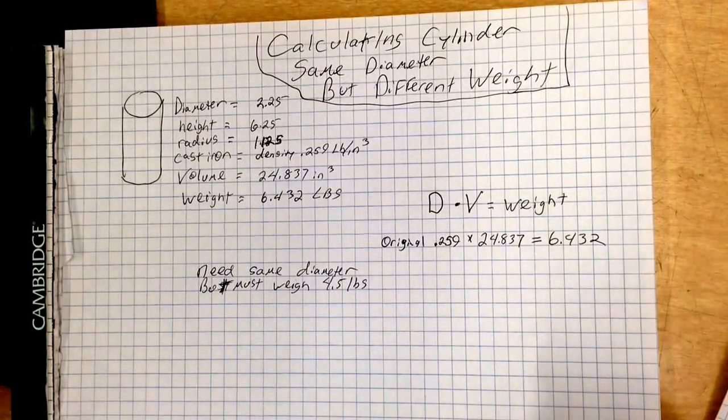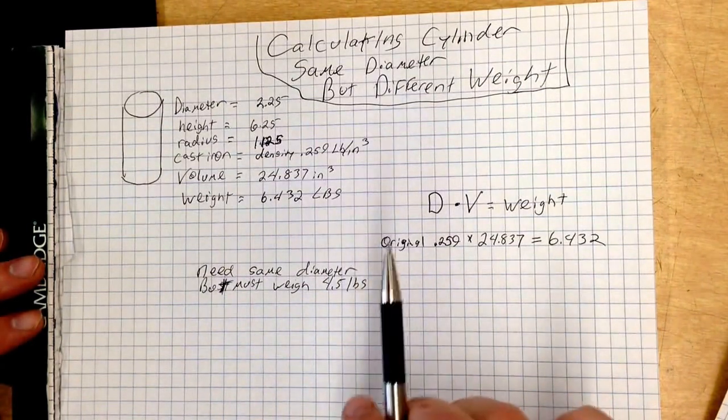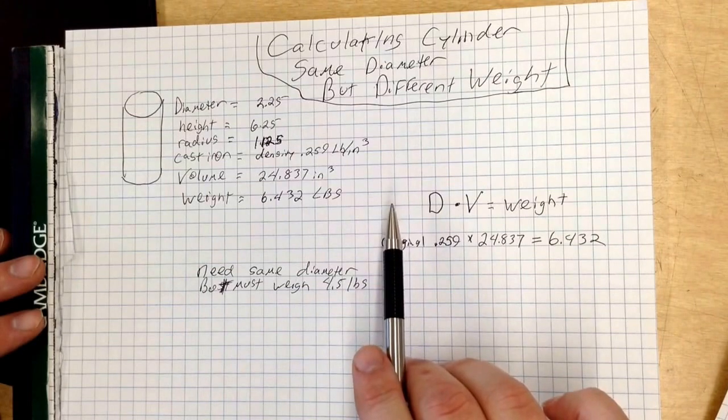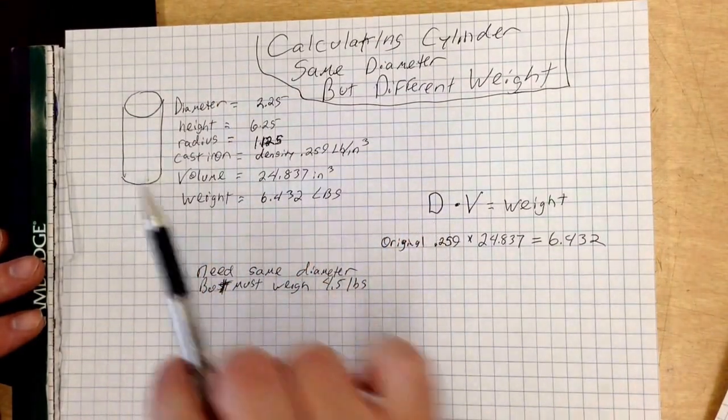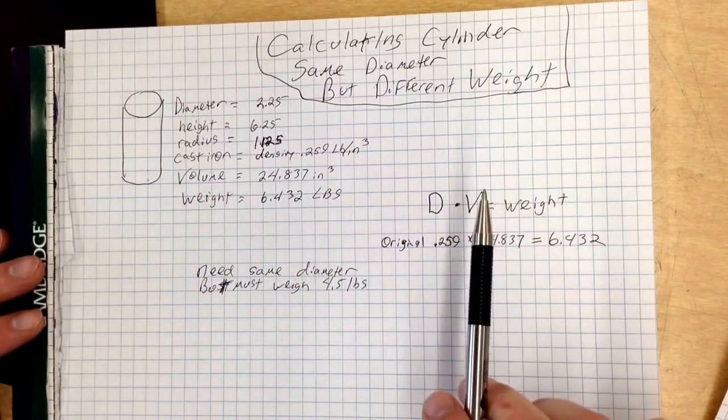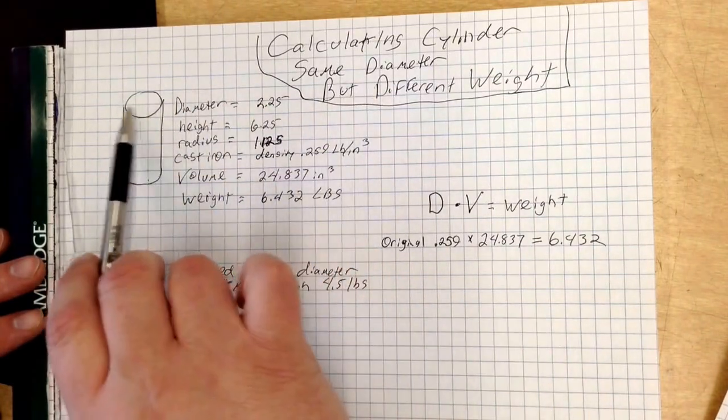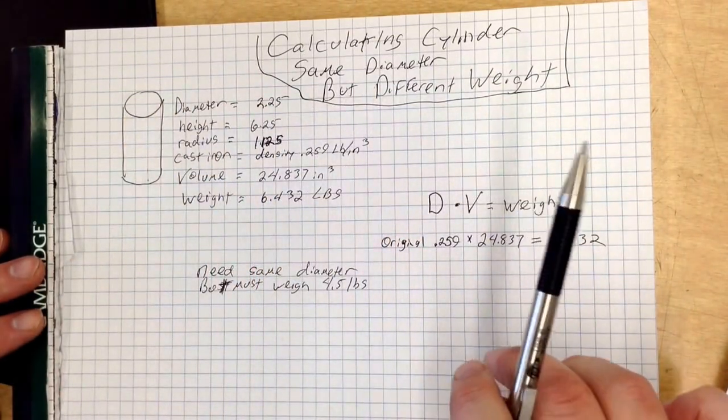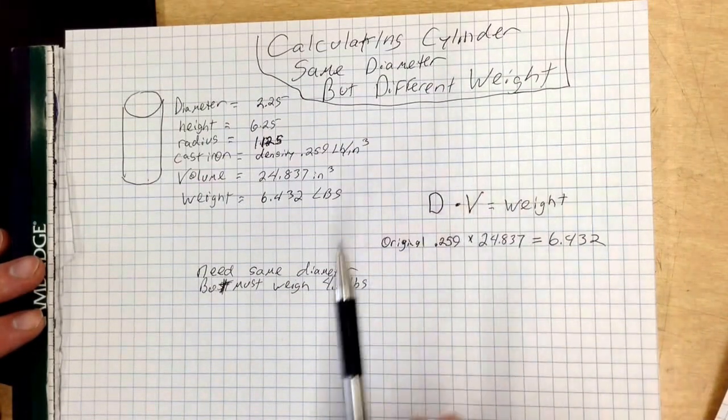Okay, we are going to take a little bit of time and keep on working on our cylinder problems. The big thing that we're going to do right now, in our previous videos, we figured out all this information previously about this cylinder. Now, let's say we have to manufacture something that maintains the same diameter but has a different weight, and that occurs quite often. Say you need to make a counterweight on a window that opens or something along those lines.